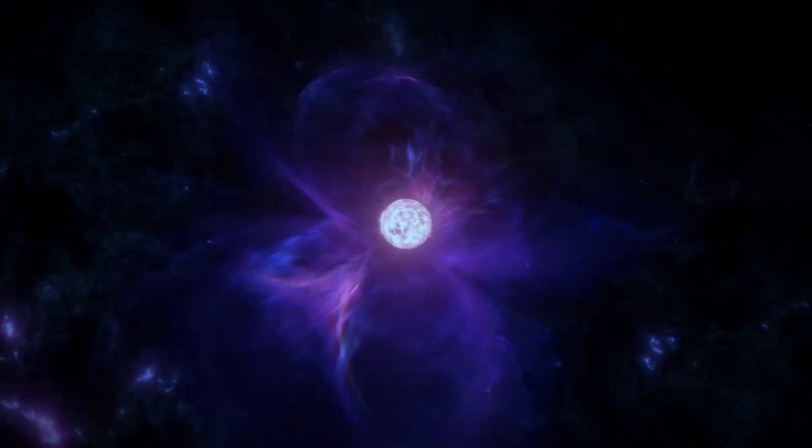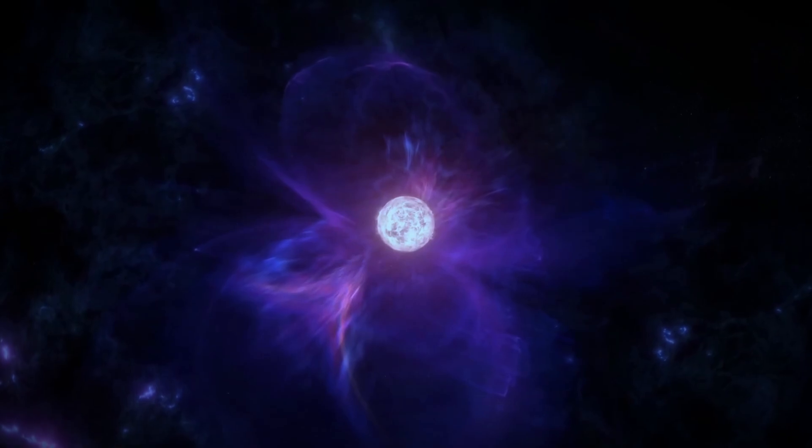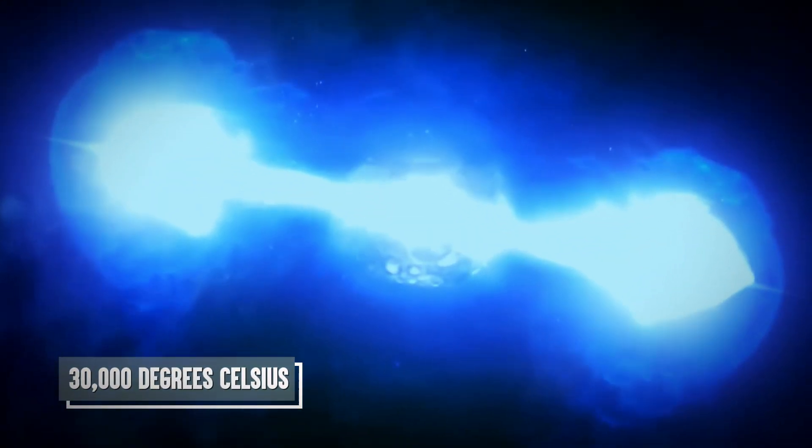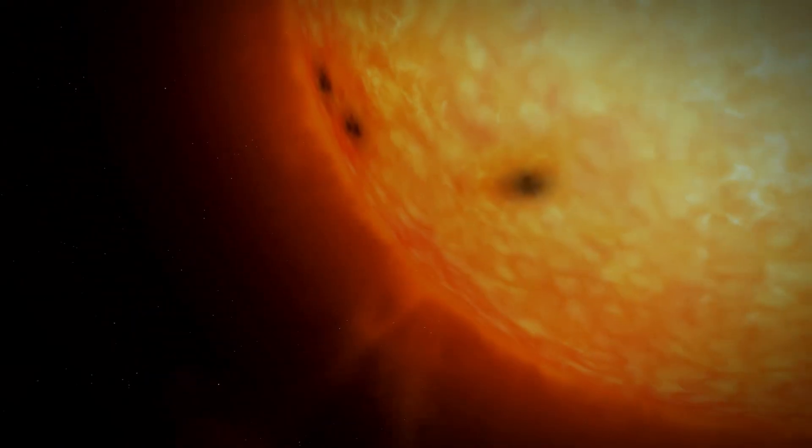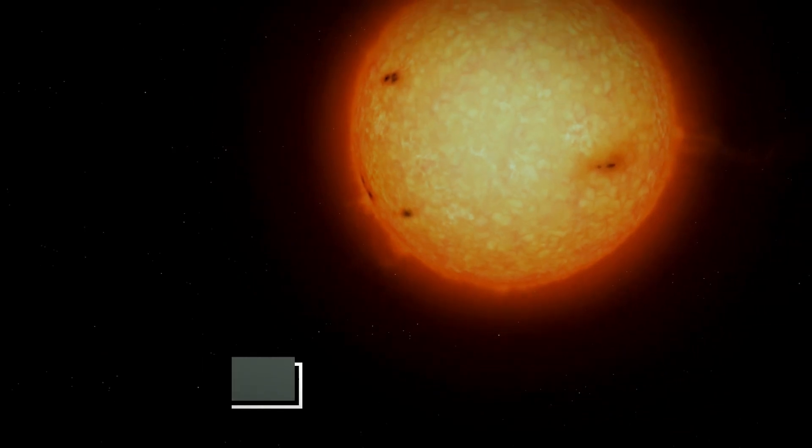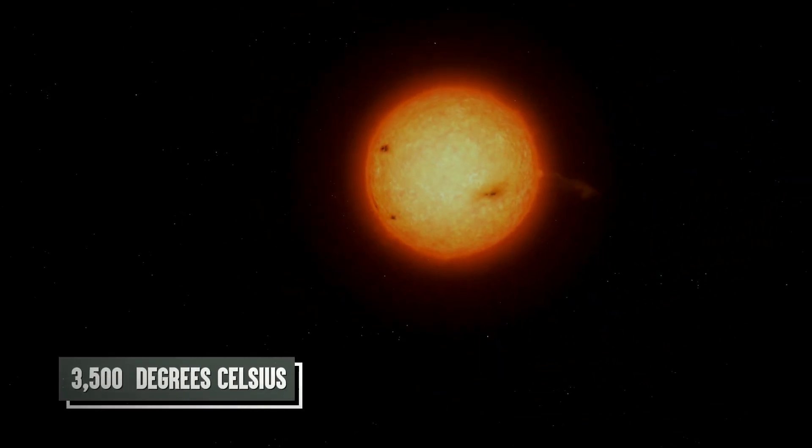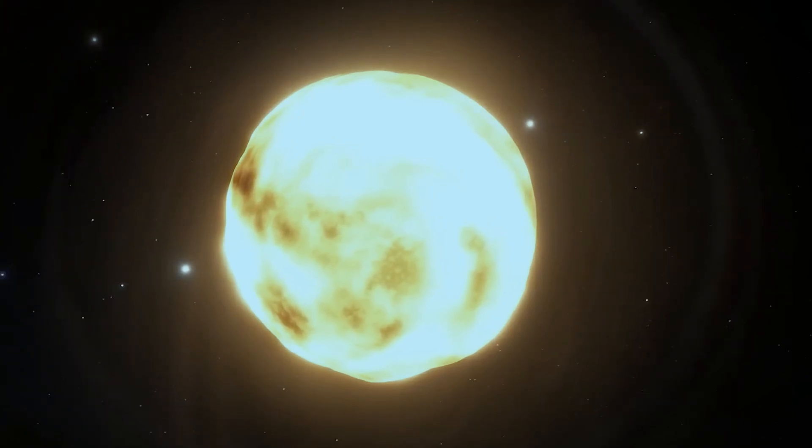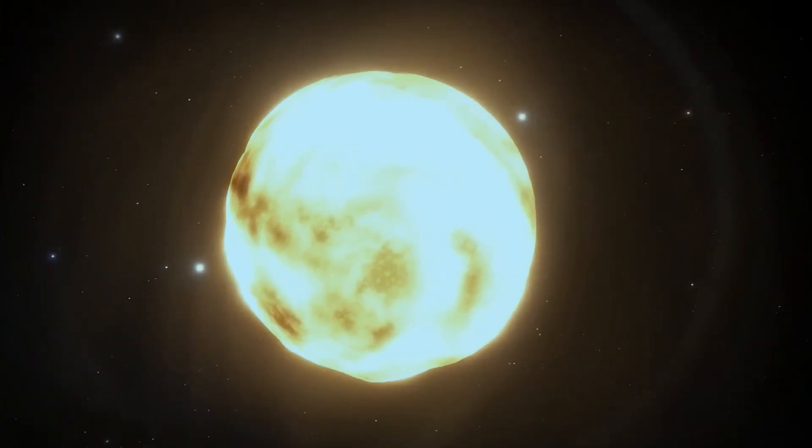Ever wondered why stars have different colors? It's all about temperature. Blue stars are the hotshots, sizzling at temperatures up to 30,000 degrees Celsius. On the cooler side, we've got red stars like Betelgeuse, hanging out at around 3,500 degrees Celsius. But don't let the term cool fool you. Get too close and you'll be toast.